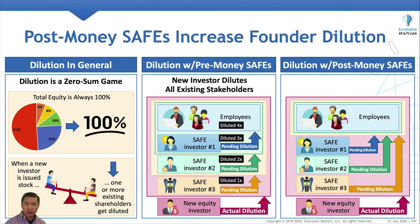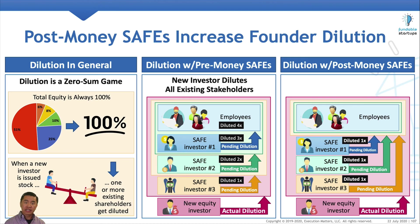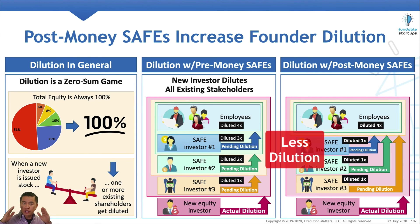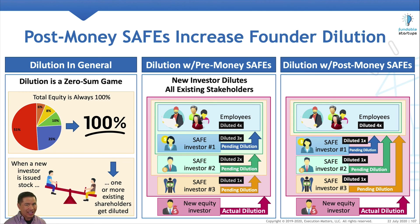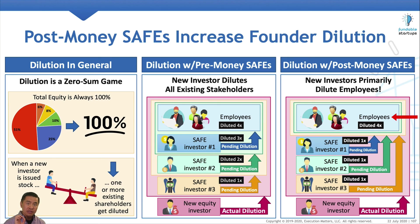Now let's summarize the dilution. Each safe investor is only diluted one time. The employees, however, get diluted four times. The change from a pre-money to a post-money safe reduces the dilution for investors one and two. If you're thinking that dilution has to go somewhere, you're absolutely right — it hits the employees. This sequential animation makes it clear how with a chain of post-money safes, new investors primarily dilute the employees.